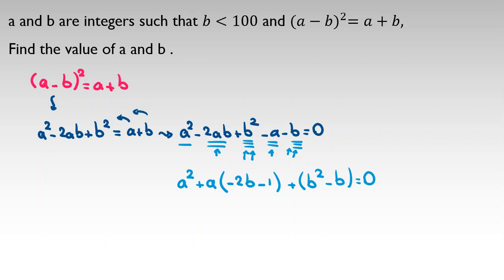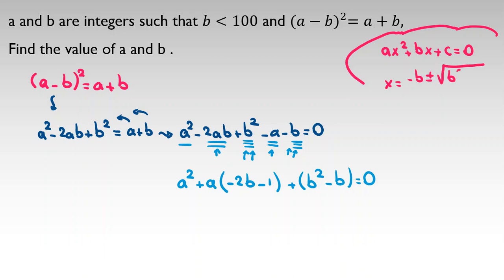For solving this I should use the quadratic formula. There is a theorem: if AX squared plus BX plus C equals 0, it is a quadratic function in terms of X, and X equals negative B plus or minus square root of B squared minus 4AC, all over 2A. Note this A is not related to the A in our problem.